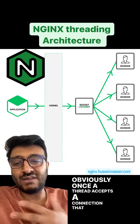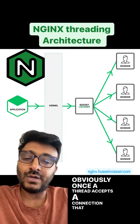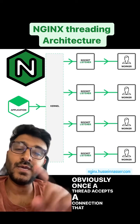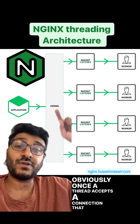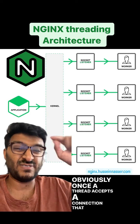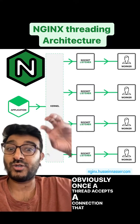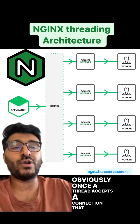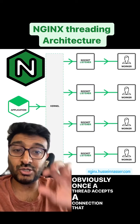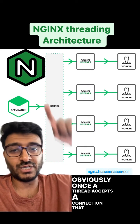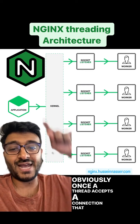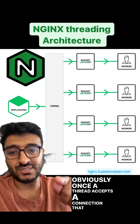In newer versions of NGINX, each thread can listen on the same port in its own listener socket through something called socket sharding, which parallelizes connection acceptance.